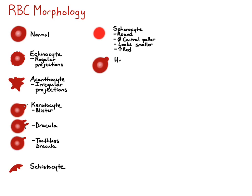The next morphology is a Heinz body. This is an aggregate of hemoglobin that's been oxidatively damaged and is forming a ball, and that hemoglobin aggregate projects out from the red blood cell, pushing the membrane out — so it looks like there's a nose on the red blood cell. If the nose were projecting out at you from the slide, it would look like a pale circle in the red blood cell.